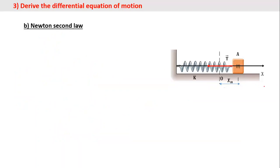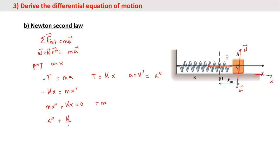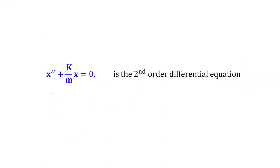Applying Newton's second law along the x-axis: the summation of external forces equals ma. The external forces acting on the object are the tension, the weight, and the normal force. By projection on the x-axis: minus T equals ma. According to Hooke's law, T equals k times x, so we have minus kx equals ma. Since acceleration equals x double prime, this gives us m · x″ plus kx equals zero. Dividing by m: x″ plus (k/m) · x equals zero, which is again the second-order differential equation.